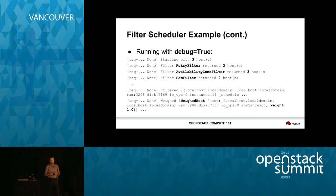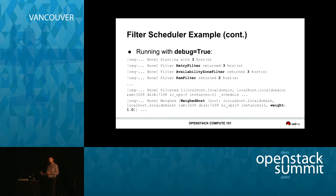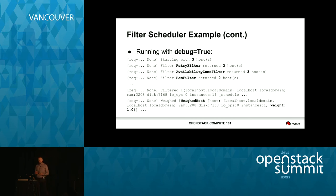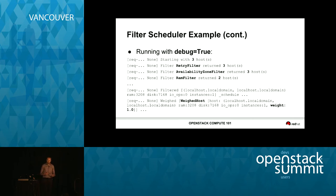One of the most common errors people run into is the 'no valid host' error — when an instance request fails because no host could be found in the scheduler. Typically it's for a good reason, not a bug, but it can be non-obvious because the user doesn't get output as to which filter failed. If you enable 'debug = true' in Nova configuration, you get much more output about what's happening. In a particular example, you can see the retry filter runs, the availability zone filter runs, and then the RAM filter kicks one host out — telling you that host was eliminated because it didn't have enough free RAM.